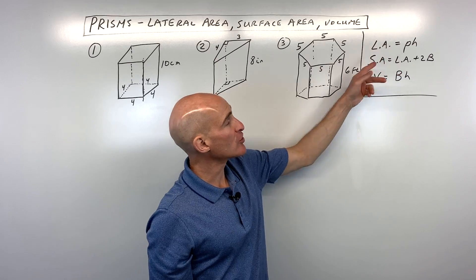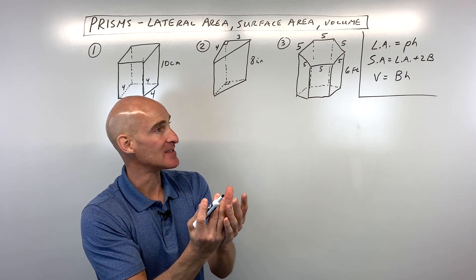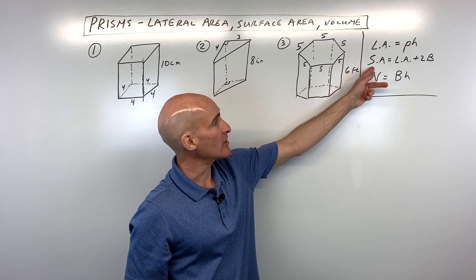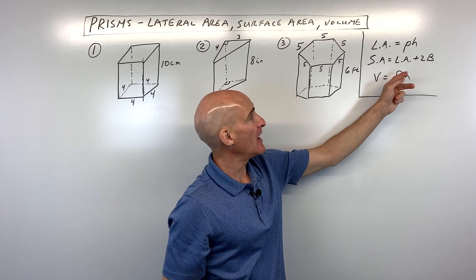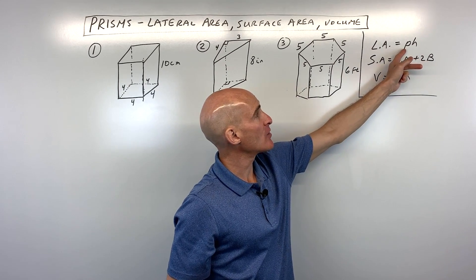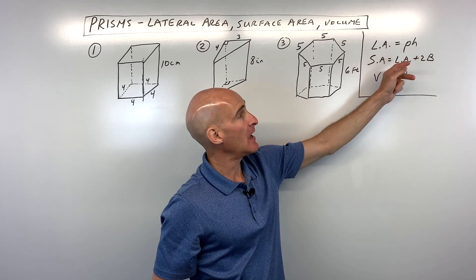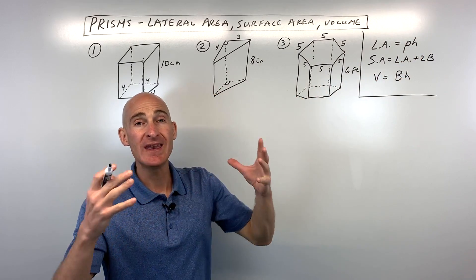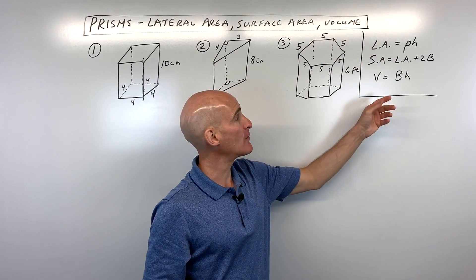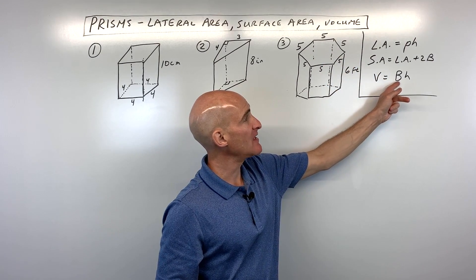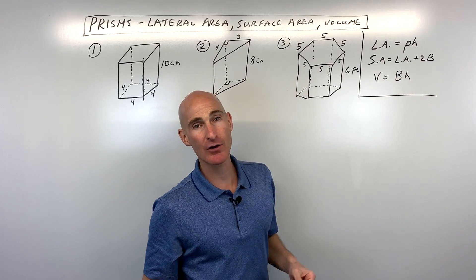When you find the lateral area, you're finding the area of the sides — lateral means sides. When you find the surface area, you're finding the area of the sides as well as the two bases. The lateral area equals the perimeter of the base times the height. The volume — like if you're filling this up with water — is the area of the base times the height. That capital B means the area of the base.